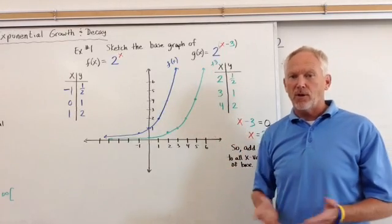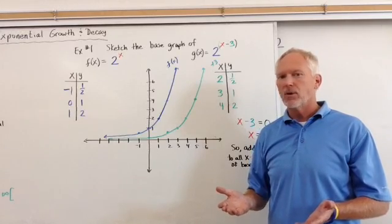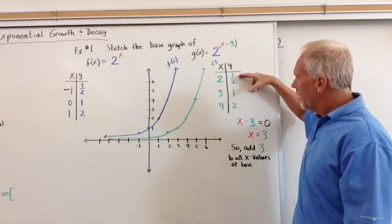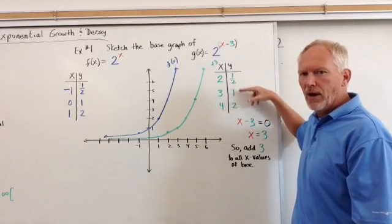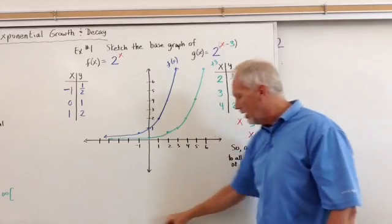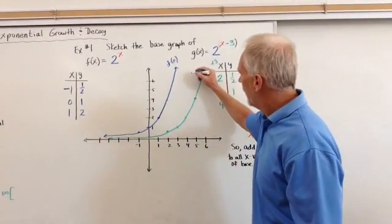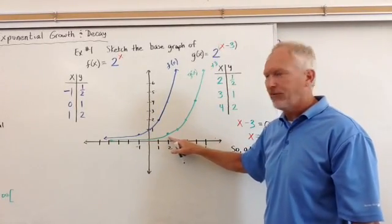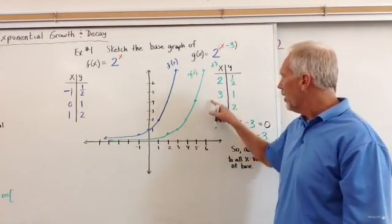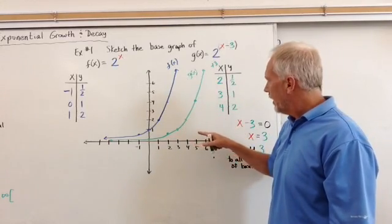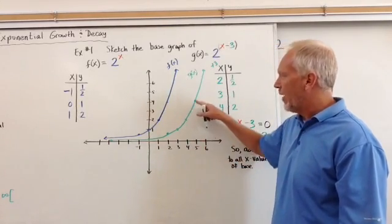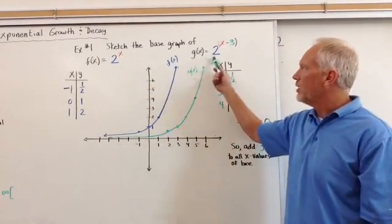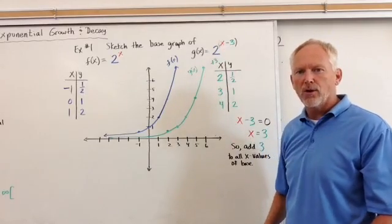And ask yourself, did anything change in the y values? No, they didn't. So there was no k value here, so it stays 0. So we keep all the y values the same: 1 half, 1 and 2. So the green will represent g(x). So here's our g(x). 2 and 1 half. So 2 goes to 1 half, 3 goes to 1, and 4 goes to 2. And if we went out to 5, it would be 4, etc. So here we have f(x) which is 2 to the x power and g(x) had a horizontal shift to it.